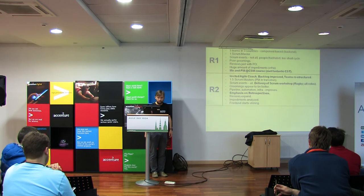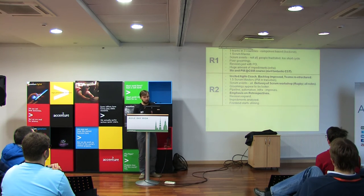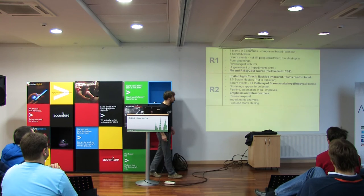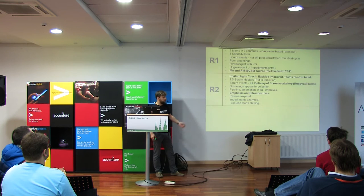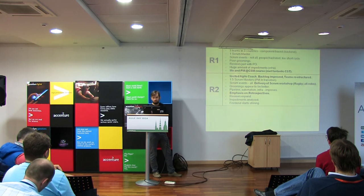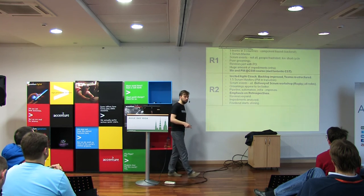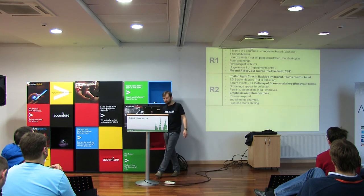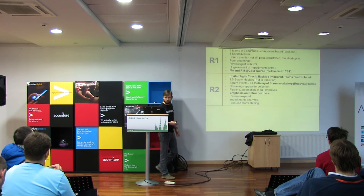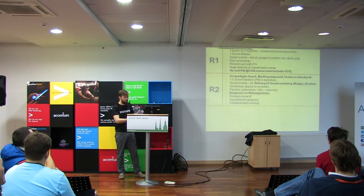Release 2 was better. We invited an Agile Coach, the backlog improved, and we had more structured teams — 1.5 Scrum Masters, the PM in transition. We tried to follow all Scrum events by the book. I designed and delivered a Scrum workshop for all of development — I used the rugby story about Scrum, we played Scrum games with different roles including management. Grooming started to get better. The pipeline started to see daylight, automation evolved. This is where we started to emphasize retrospectives — learning from how we work and improving in the next iteration. Reviews started to expand, some users began coming in to see what we were building. We started analyzing impediments and figuring out how to make them less disruptive. The front end finally started shining, which made it easier to structure the backlog.